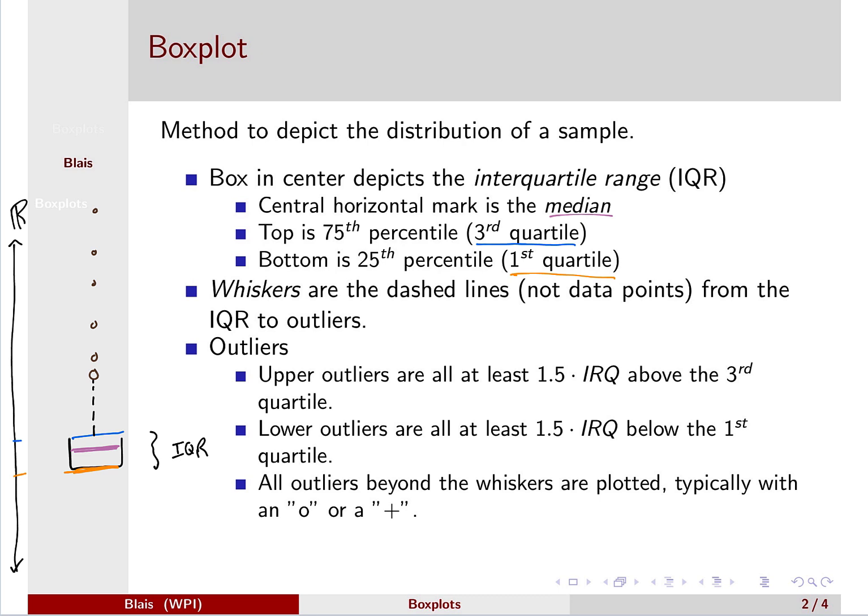For the bottom we do the same thing, we do the mirror image. So we look for the first point that is at least a distance of one and a half times the width of that interquartile range below the bottom of the box. So we draw that whiskers again, this dashed line to that point.